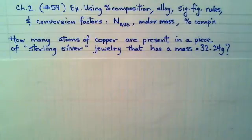And practicing our significant figure rules, because you'll see there are two different operations in this question. The question states, how many atoms of copper are present in a piece of sterling silver jewelry that has a mass of 32.24 grams? So, a couple of things we need to know before we get going. Sterling silver is actually an alloy. An alloy, you can consider to be a solution, but a solid solution. So, usually when we hear the word solution, we think of liquids, like a salt solution, or seawater as a solution of dissolved salts in water.